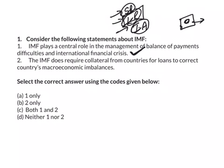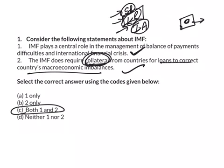IMF does require collateral from countries for loans to correct countries' macroeconomic imbalances. Yes, in order to loan to a country, it requires collateral — that means a surety from the country. So as both the statements here are correct, the answer here is both 1 and 2. The answer is C.